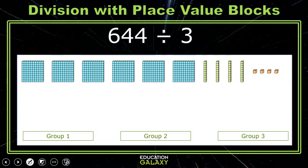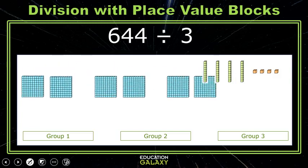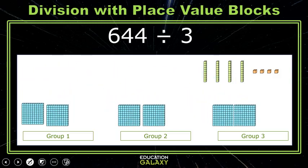If we divide our 6 hundreds into 3 groups, we will have 2 hundreds in each group. We can divide our 4 tens into 3 groups. That will give us 1 ten in each group and a ten left over.